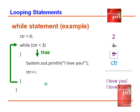Increment CTR again, making CTR equal to 2. Look back again after reaching the closing brace. Is CTR less than 3? True. CTR is 2, that makes it less than 3. Execute the system.out.println 'I love you' for the third time.